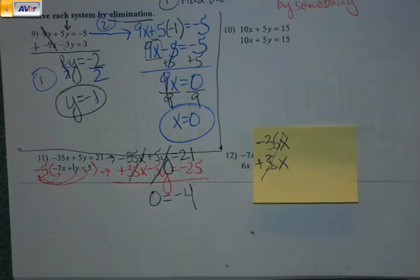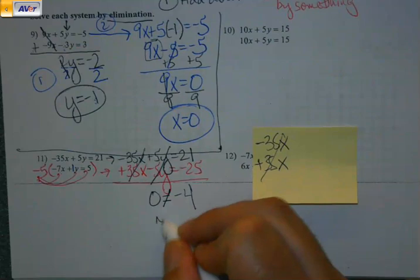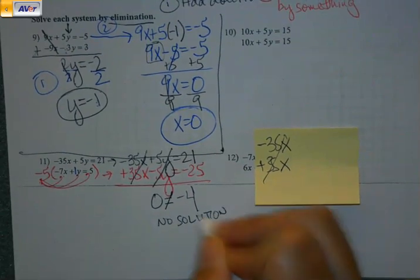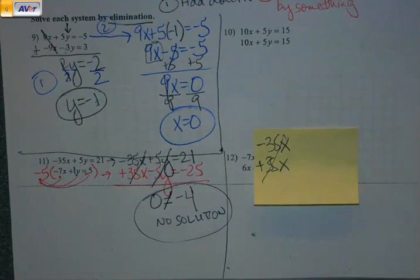21 plus negative 25 is negative 4. We've seen this before. We saw this yesterday. 0 does not equal negative 4. And since there's no variables left, there's no solution. Now, that's a special case. That's not going to happen every time. That's kind of abnormal, actually.